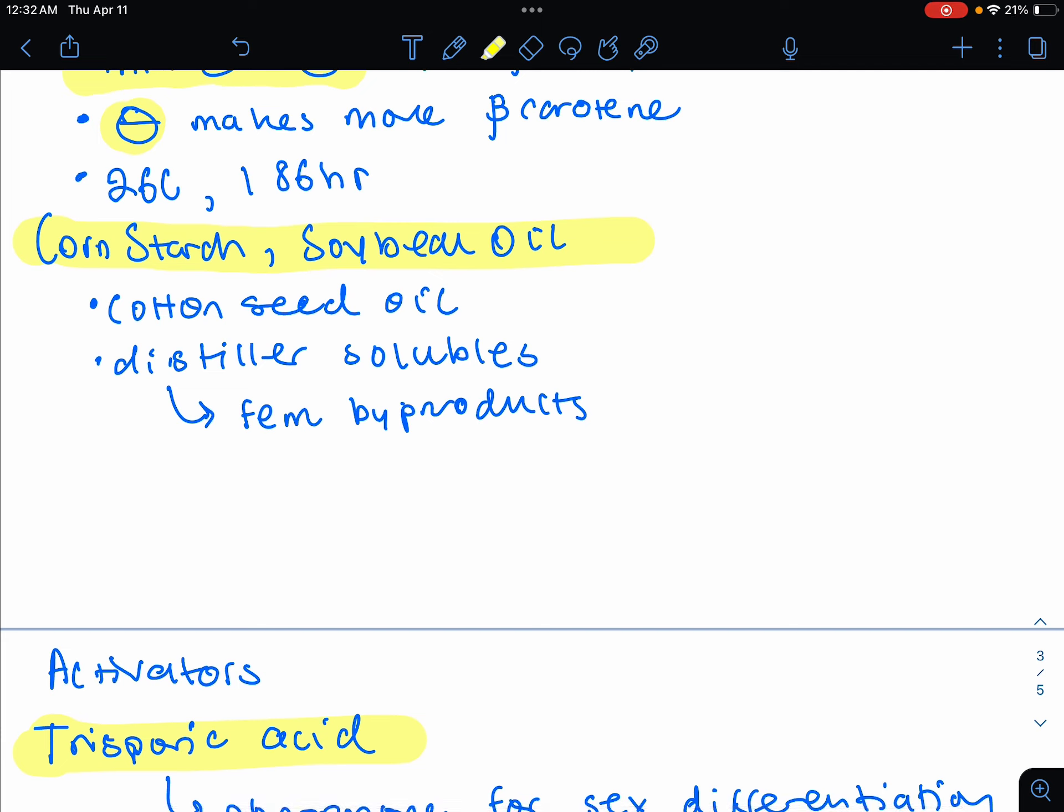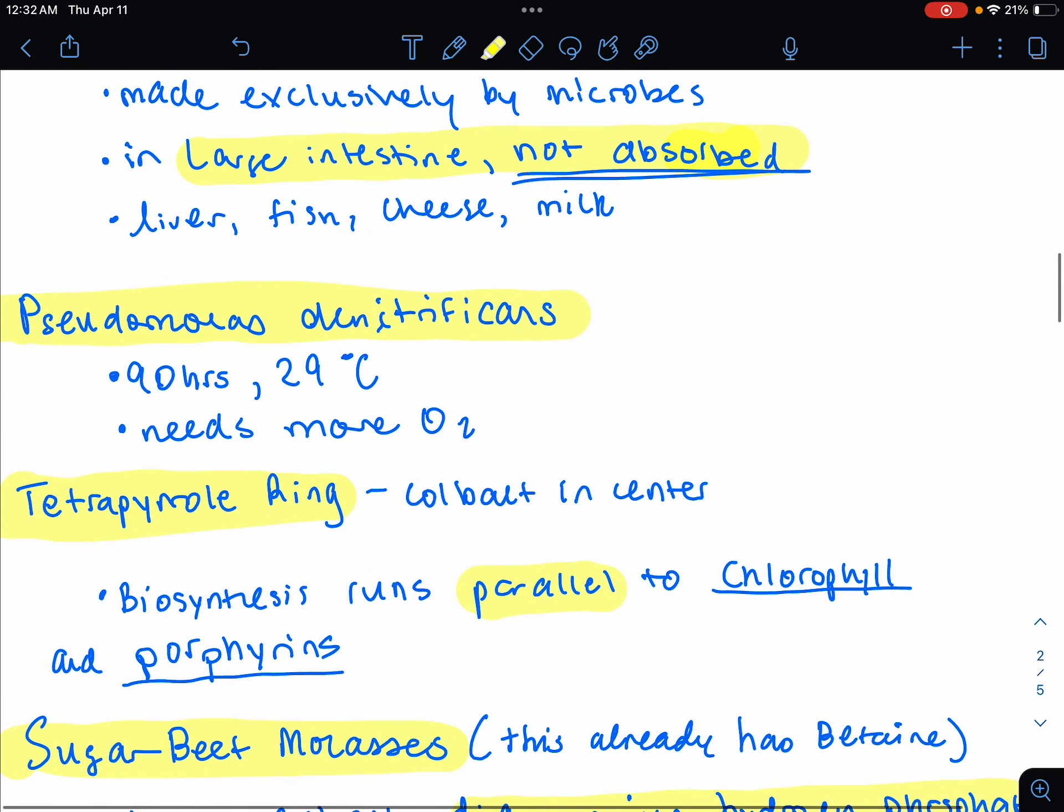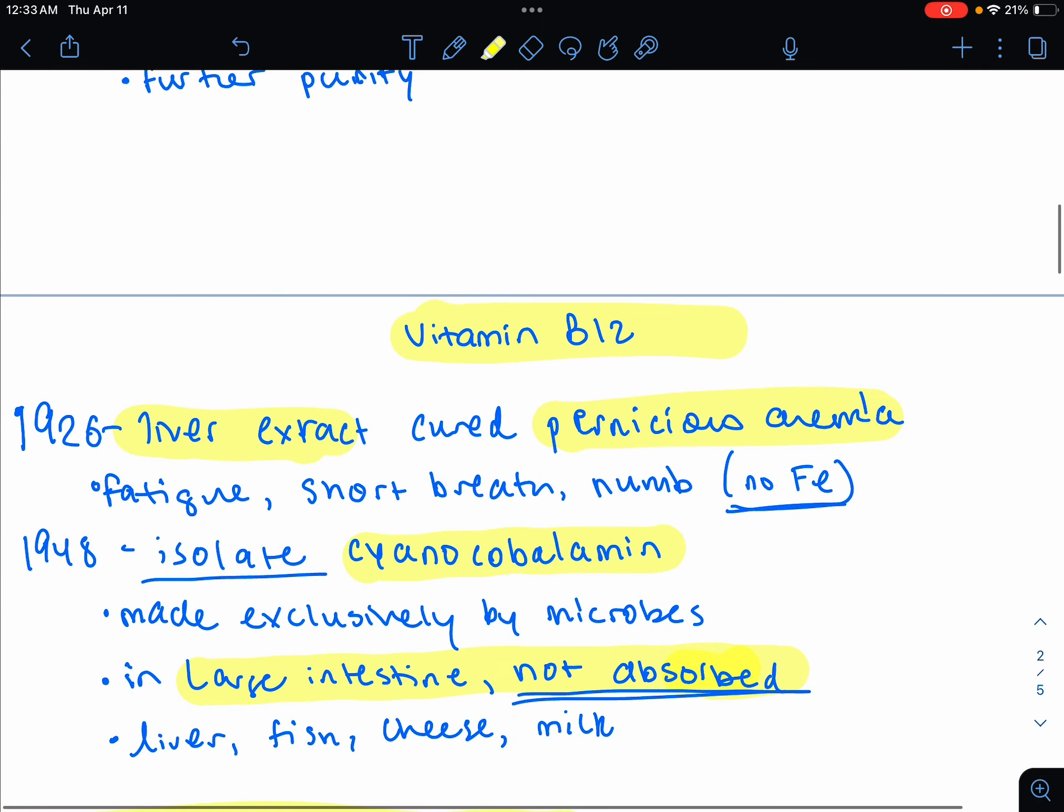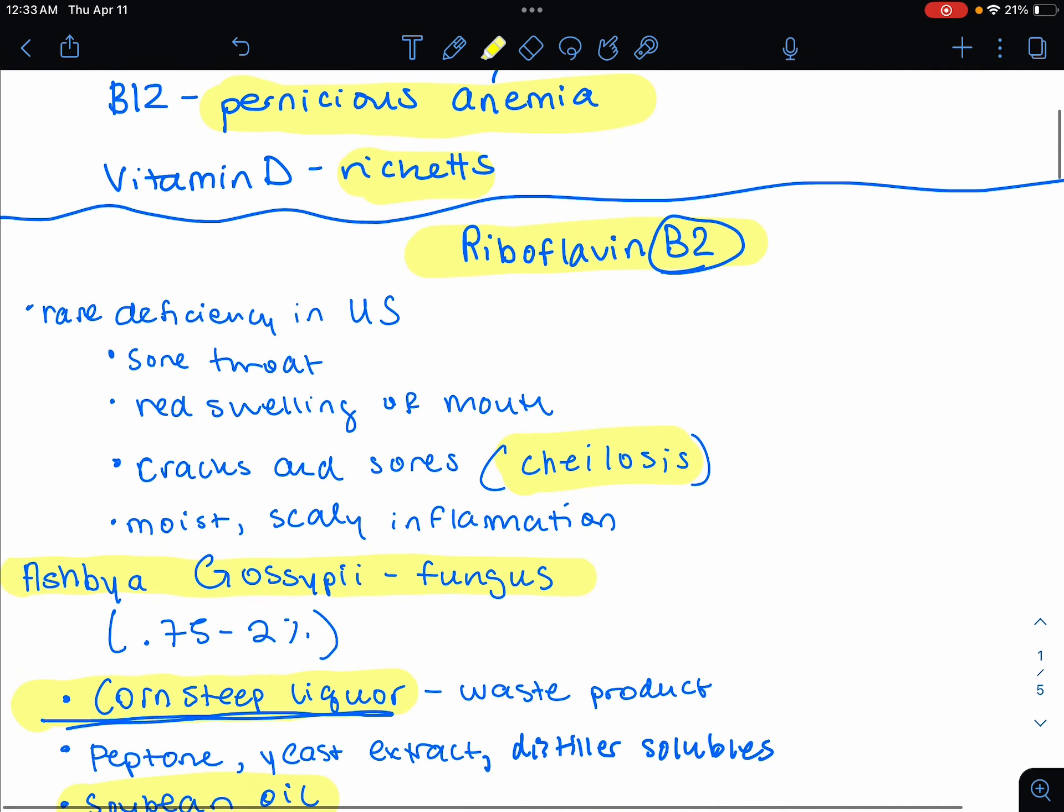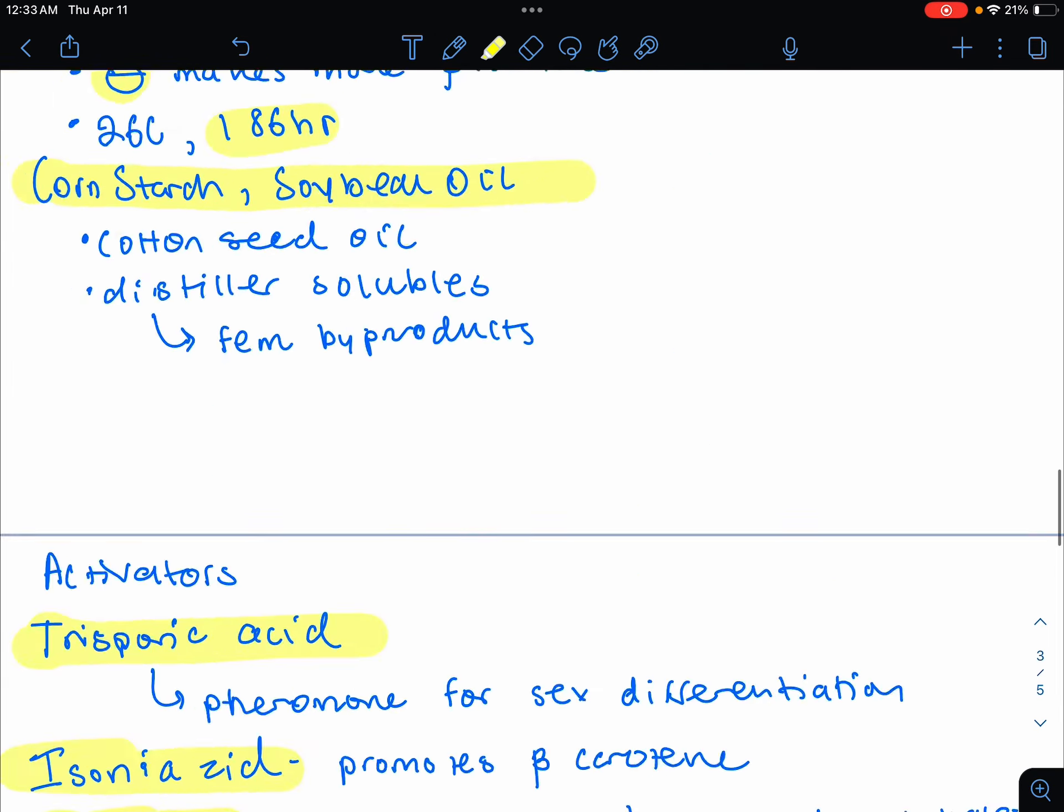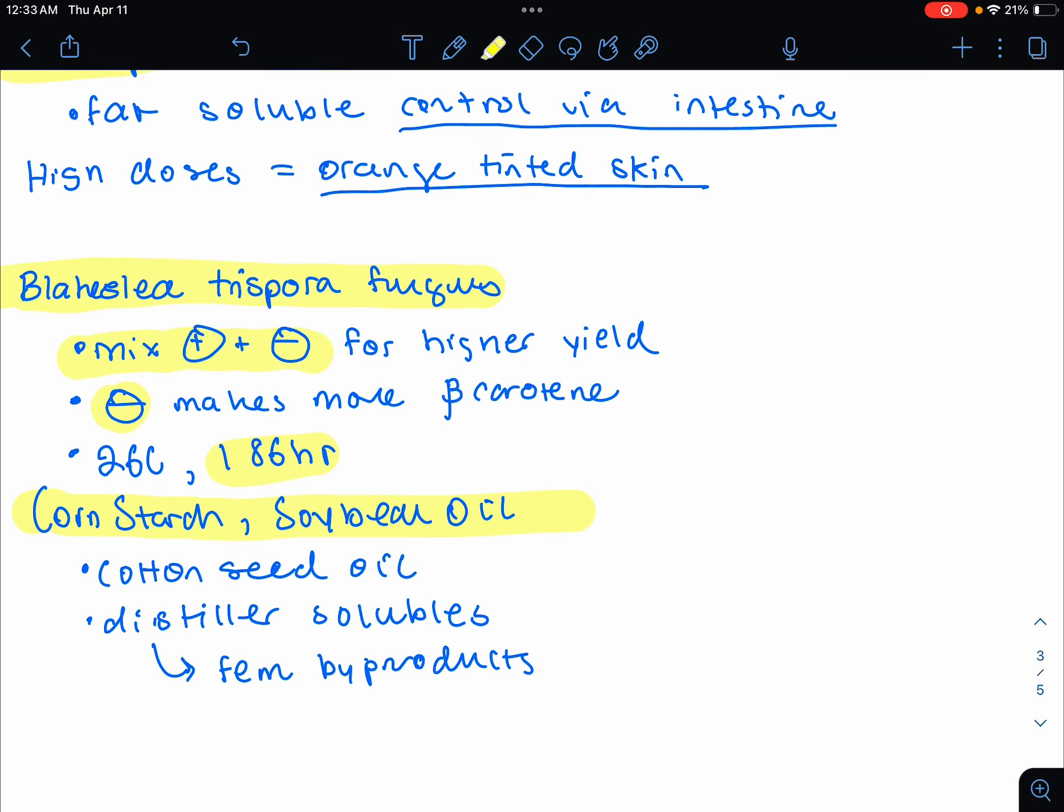It looks like the temperature is going to be 26 degrees. Time is 186 hours, so let's compare it to the other ones quickly. The time for the B12 was 90 hours at 29. And then the riboflavin was 7 days at 28, so this beta-carotene is like the coldest because it's at 26 compared to the other ones we've discussed. It's not the longest. The B2 is longer because it was 7 days, and this one's only 186 hours.